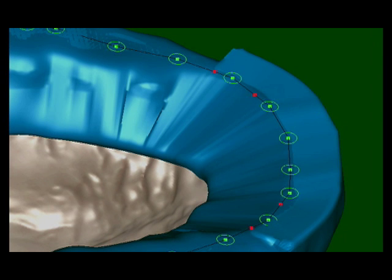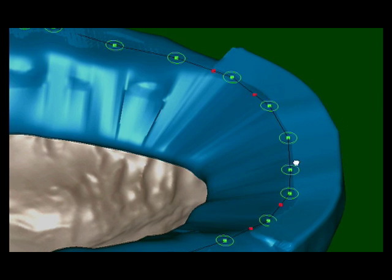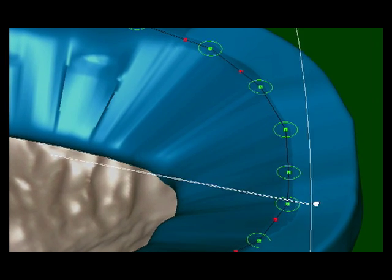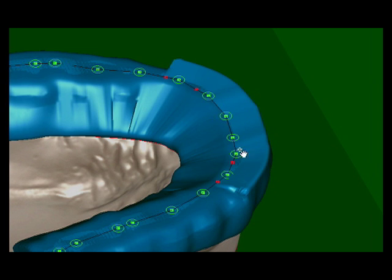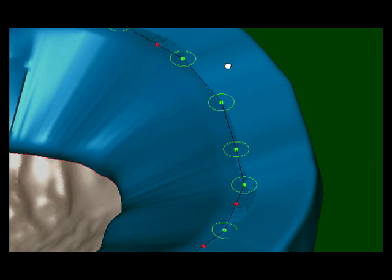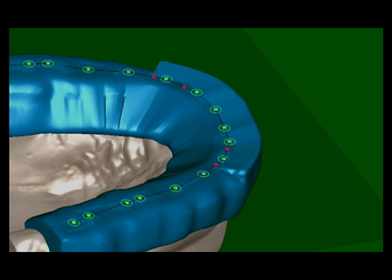Software also allows the width of horizontal shelves adjacent to the ramp to be specified. Here we see a CR splint designed without a shelf, a 1mm shelf, and a 2mm shelf.